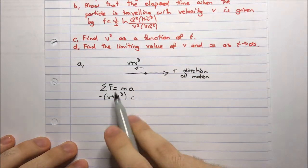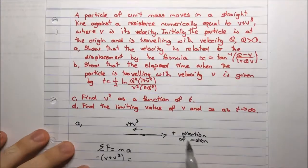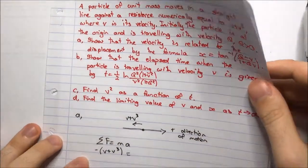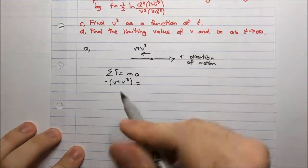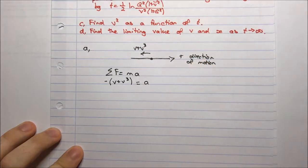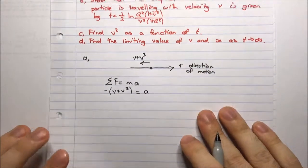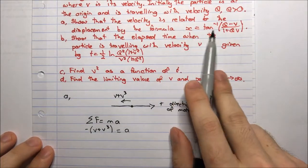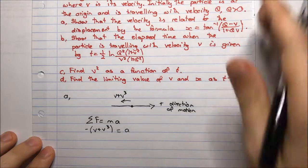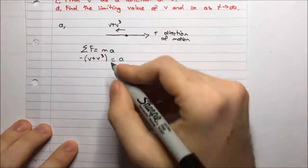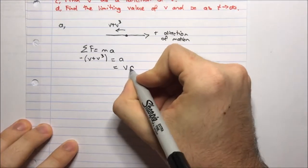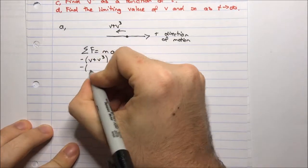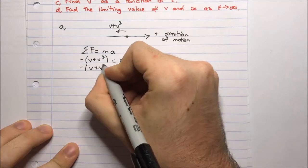Newton's law says the sum of forces equals mass times acceleration. The only force is the resisting force, in the opposite direction to positive motion, so it's negative (v plus v cubed). That equals mass times acceleration. We have unit mass, so mass equals 1, giving just acceleration. Since we want x in terms of v, acceleration is v dv/dx, giving v dv/dx equals negative (v plus v cubed).